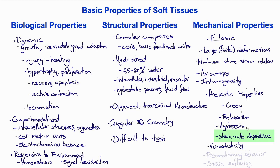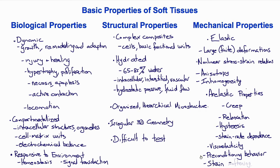Strain rate dependence refers to the fact that the stress-strain relation depends on the rate at which the strain is applied. Together, these properties are seen in materials known as viscoelastic, that combine viscous and elastic properties. Other anelastic properties of soft tissues include preconditioning behavior, whereby the results of one test are different from the subsequent test, and strain softening, whereby the results of a test are sensitive to the previous maximum load experienced by the tissue.